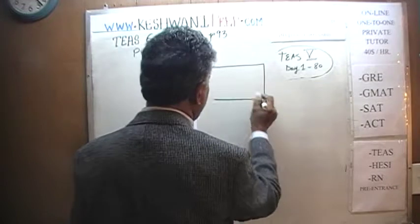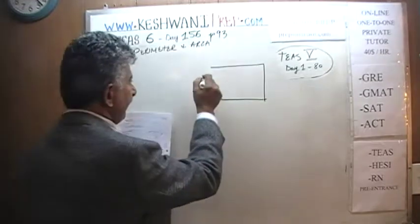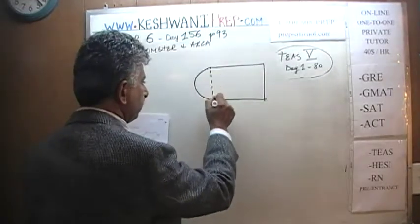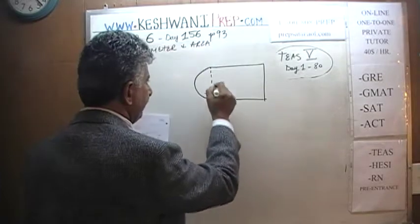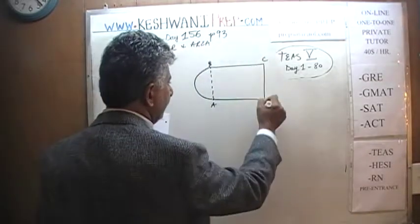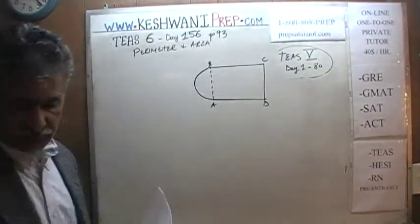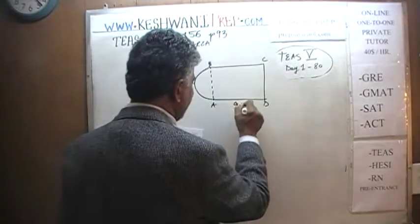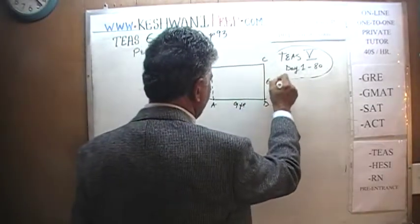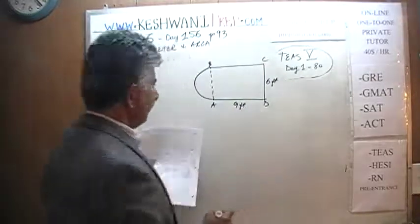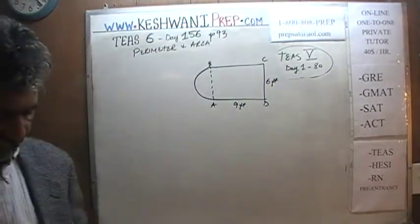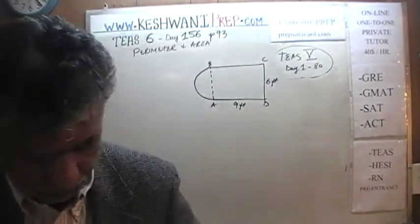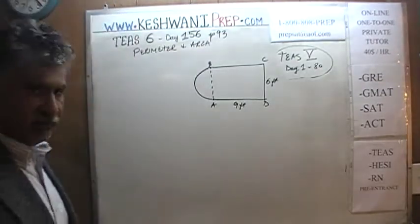We are told that three sides form part of a rectangle and one side is a semicircle. Points A, B, C, D form a rectangle. We are told that one side is 9 feet long and another side is 6 feet long. The question is: what is the perimeter of this figure? And once we have the perimeter, the next question is what is its area?